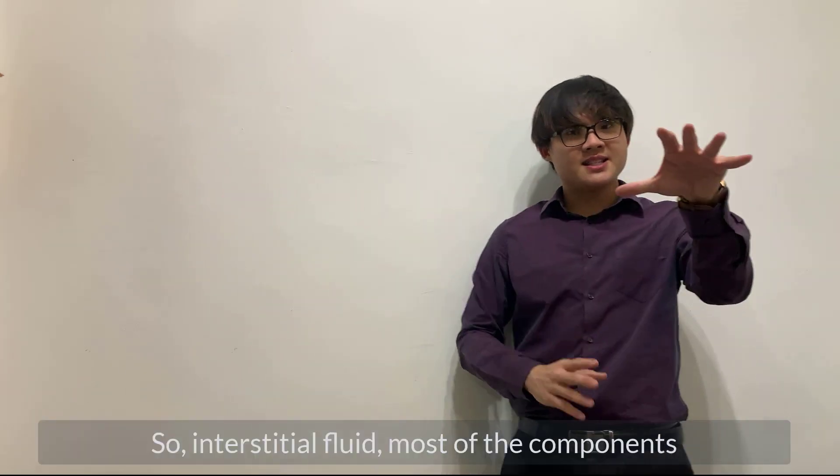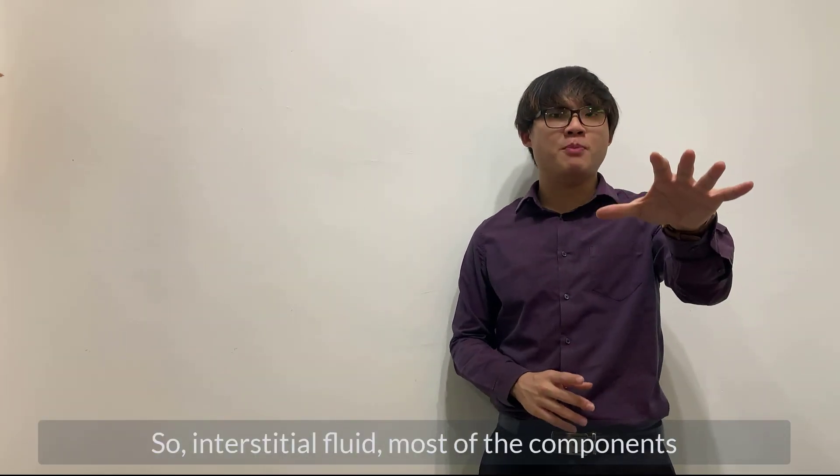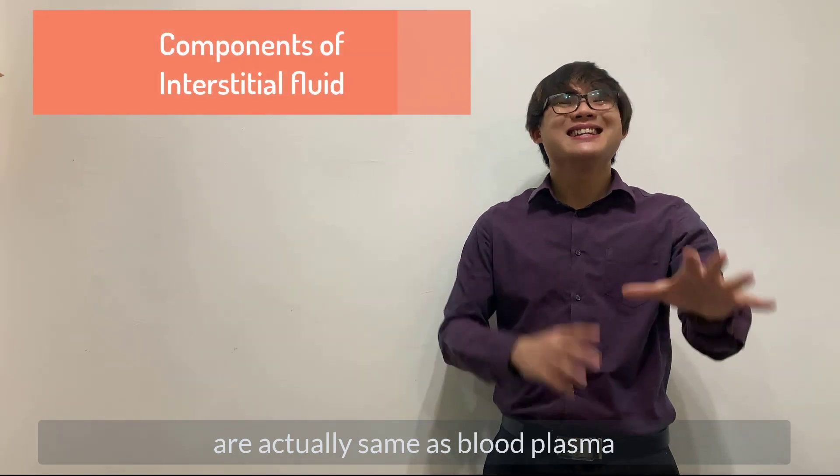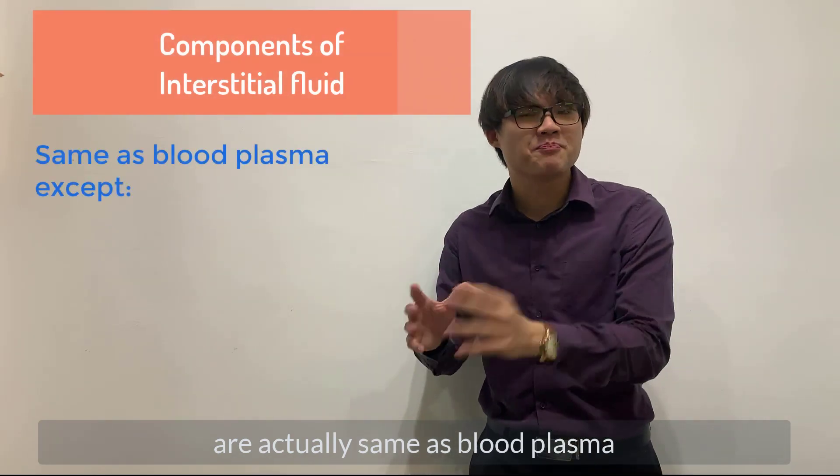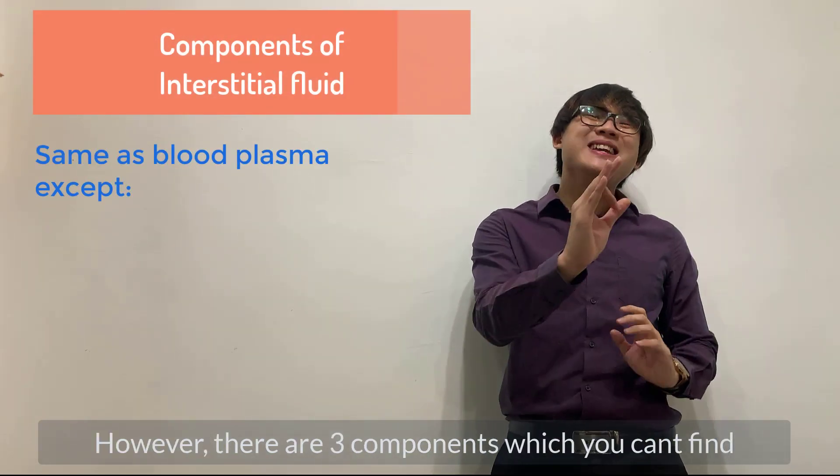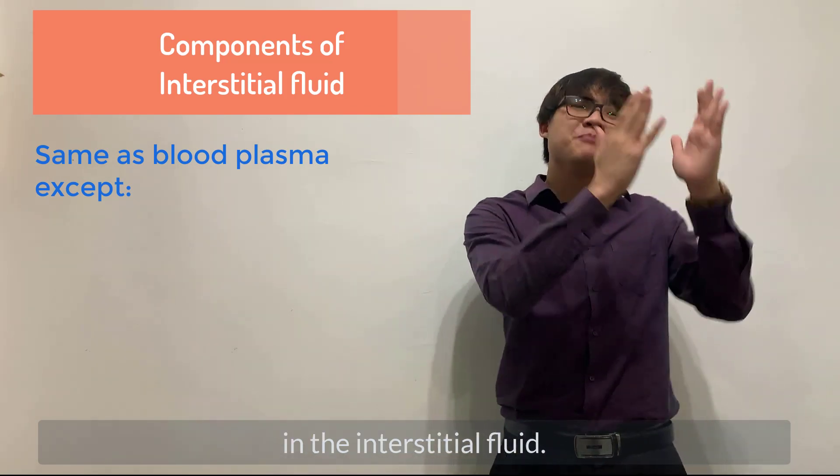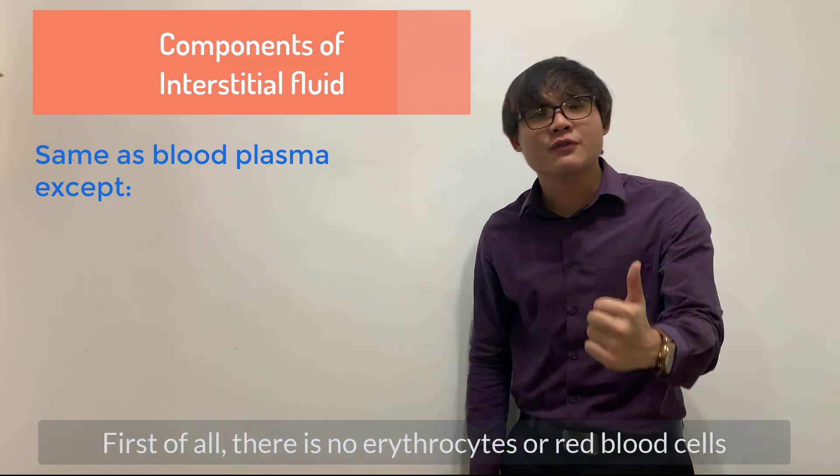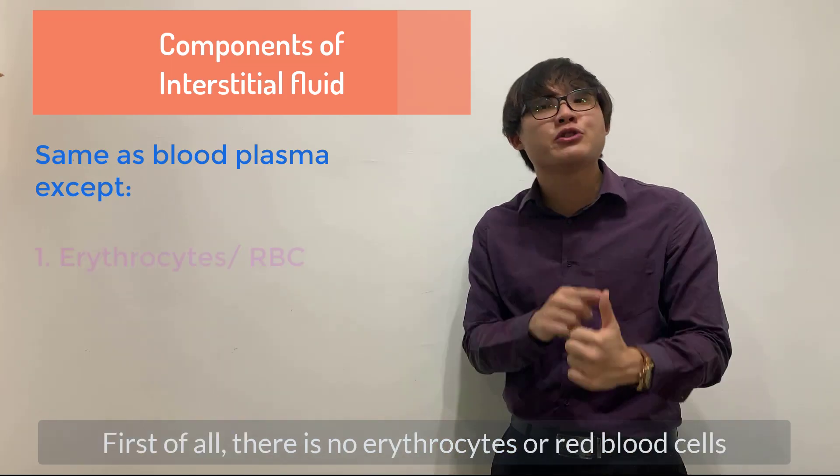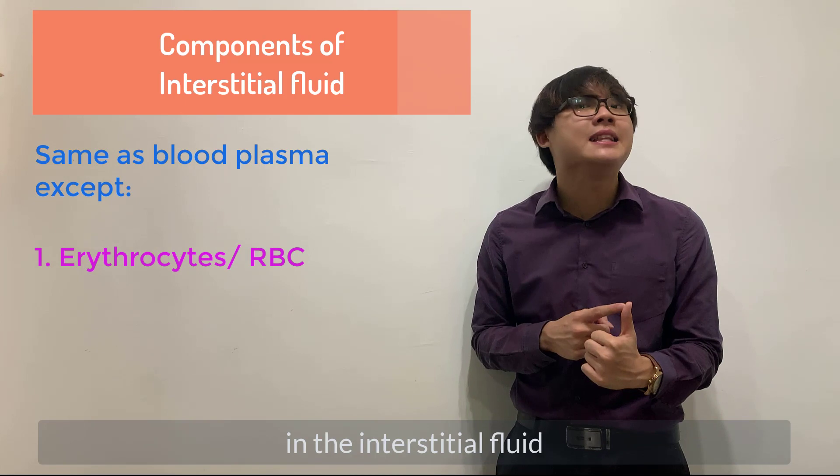So interstitial fluid, most of the components are actually same as the blood plasma. However, there are three cellular components which you cannot find in the interstitial fluid. First of all, there is no erythrocytes or red blood cells in the interstitial fluid.